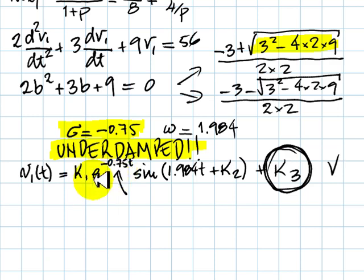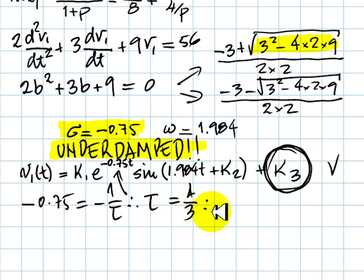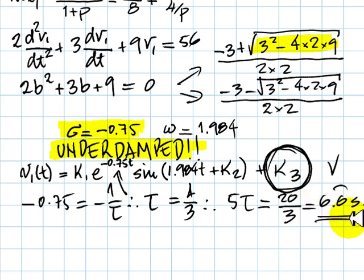This negative 0.75 is no other than negative 1 over tau. That means that tau, in this case, is 4 over 3, which implies that to reach steady state, we need 5 tau, and 5 tau would be 20 over 3.